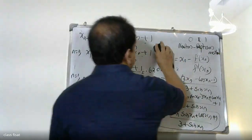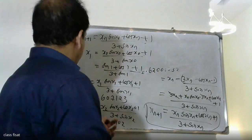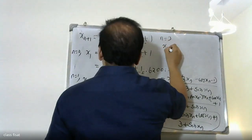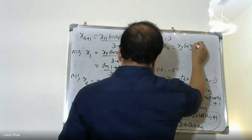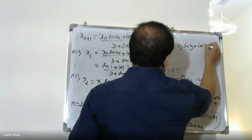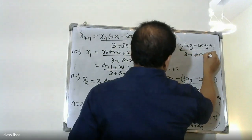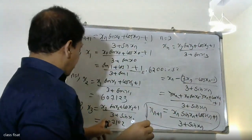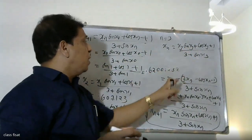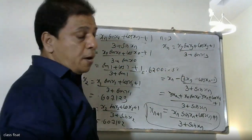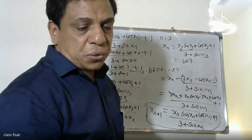For the next iteration, x4 is computed using x3: x3 sin x3 plus cos x3 plus 1, divided by 3 plus sin x3. Substituting x3 equals 0.607102, we calculate x4 value equals 0.607102.